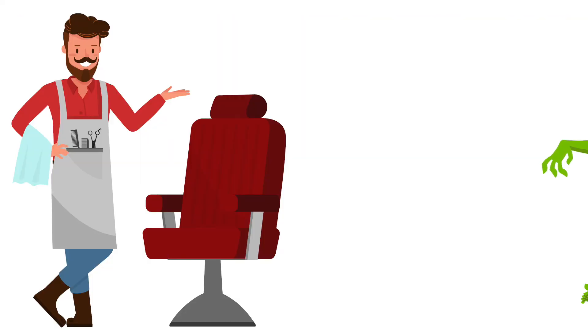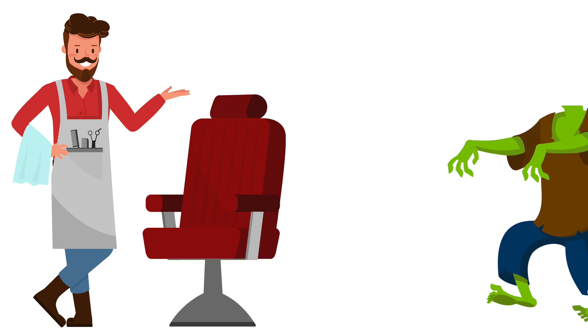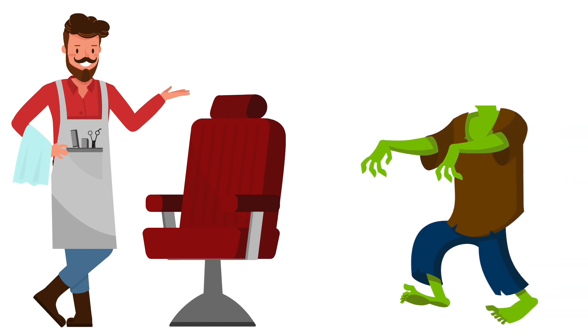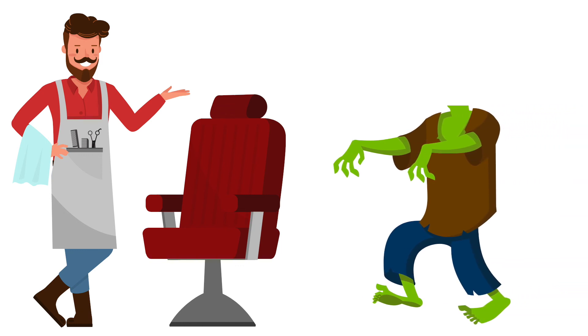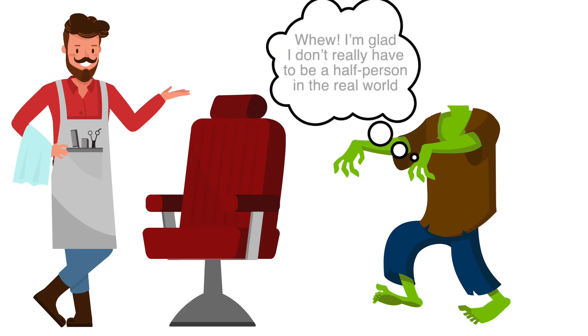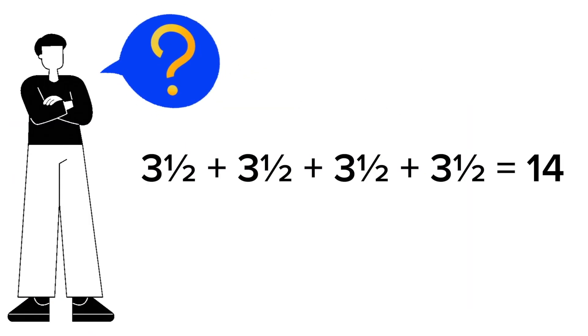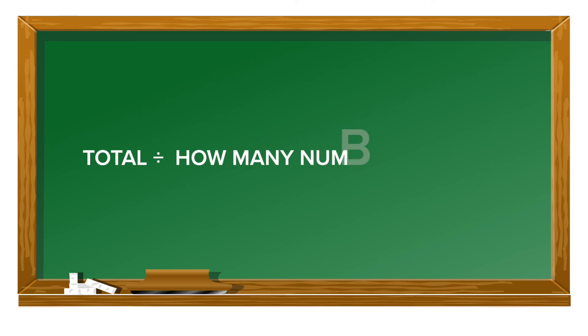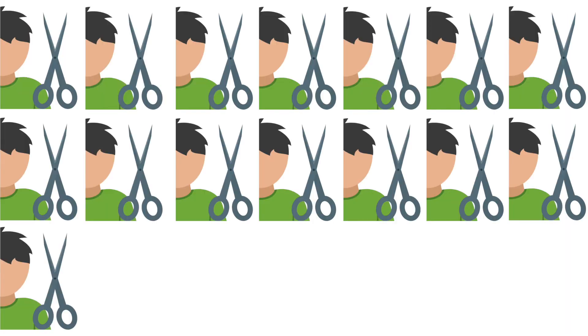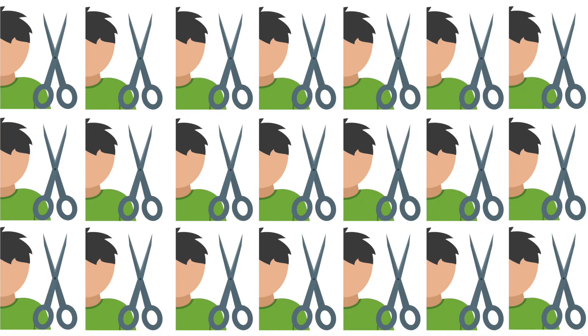It's true — three and a half plus three and a half plus three and a half plus three and a half does equal fourteen. But honestly, I do think it would be a little bit weird to have a half person walk in to get a haircut. In fact, you could think of average as a made-up mathematical idea. It lets us think about what it would be like if all the numbers were the same. In math, average is the answer when you add up the total of a set of numbers and divide that total by how many numbers there are. Average lets us think about what it would be like if all the numbers were the same.